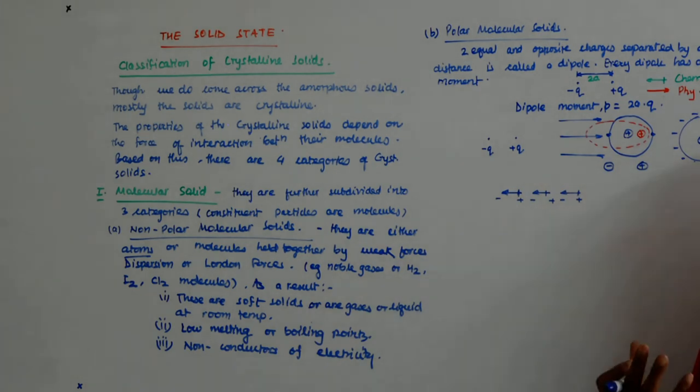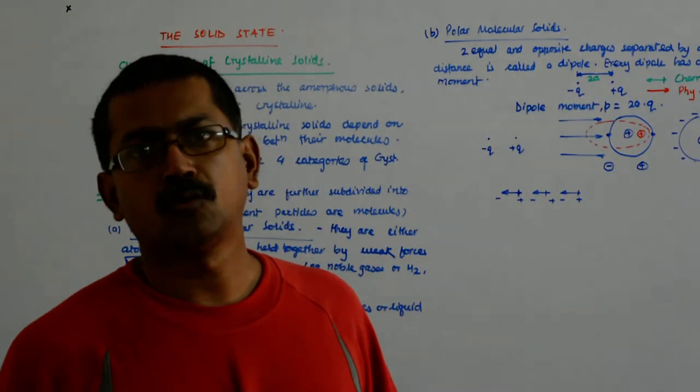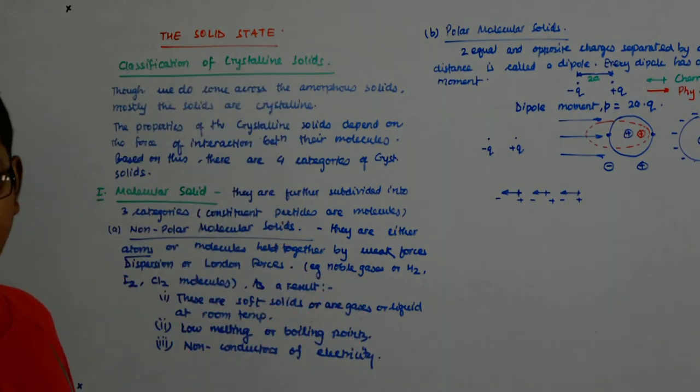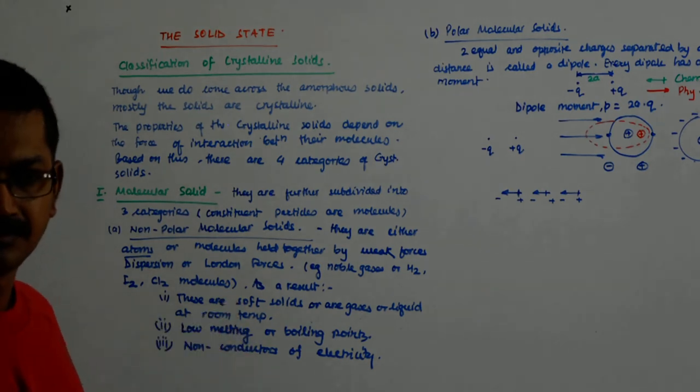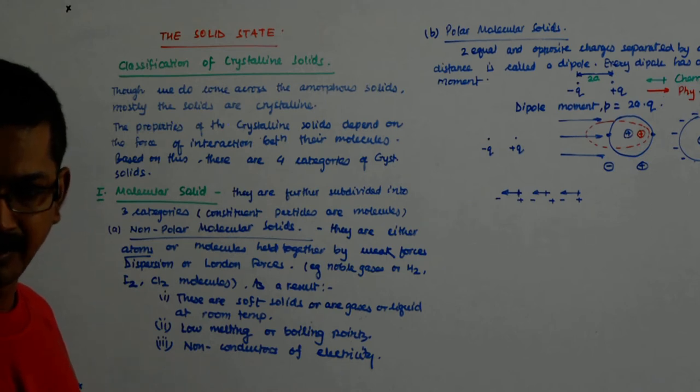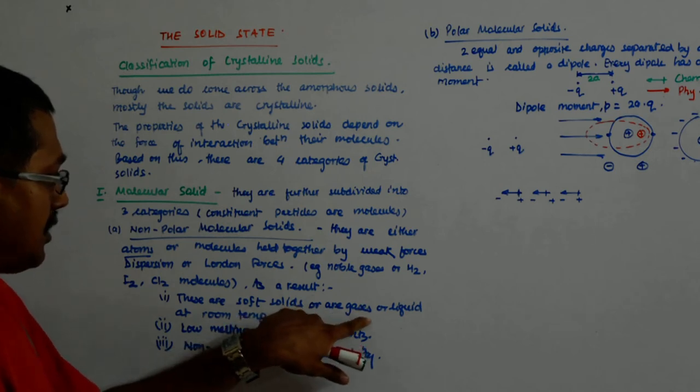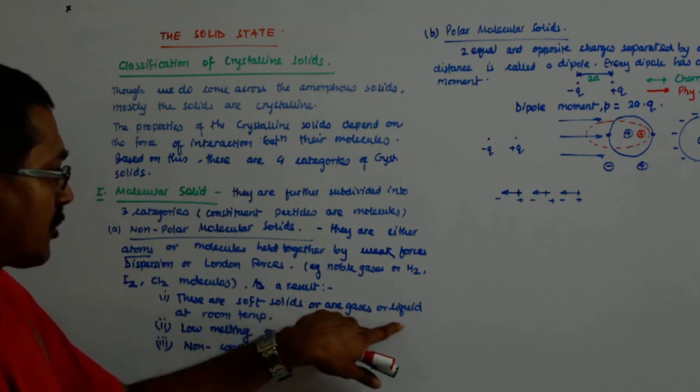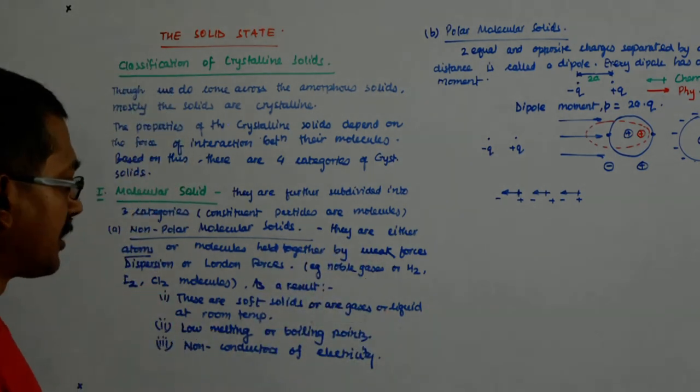What happens? The interaction that develops between dipole and dipole has got electrostatic attraction about them. Now the moment there is electrostatic attraction, what will happen to the solid? The solid will be a bit less soft. It might not be a gas or a liquid, it might start becoming solid.